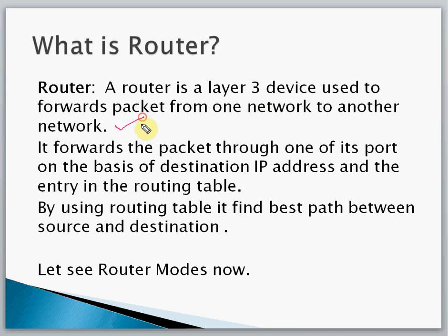It forwards the packet through one of its ports based on the destination IP address and entries in the routing table. The routing table is a table which the router maintains inside itself, and it records the best path of the network.